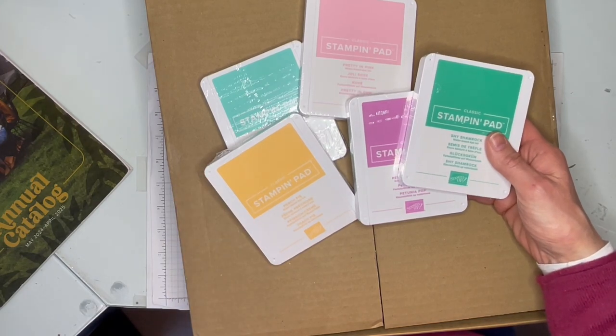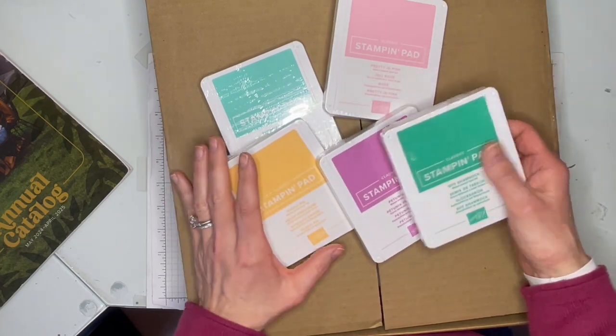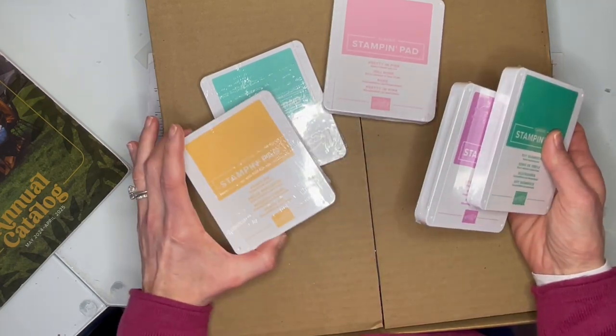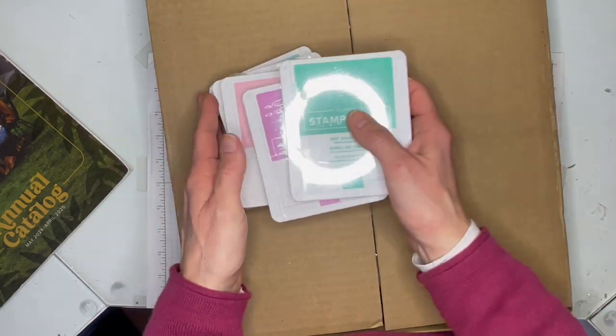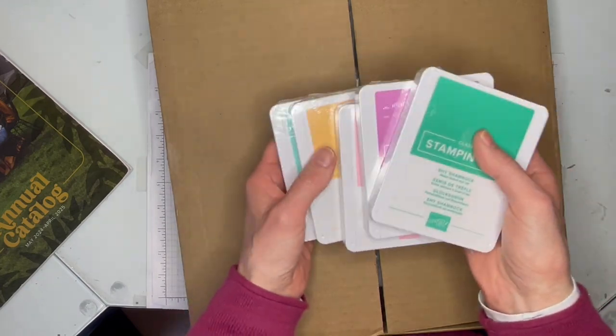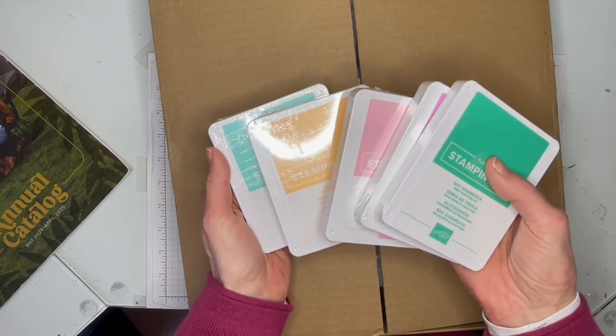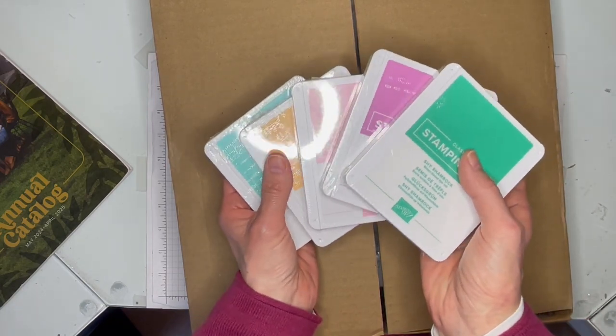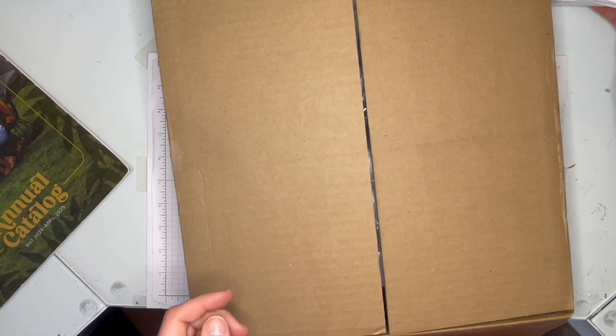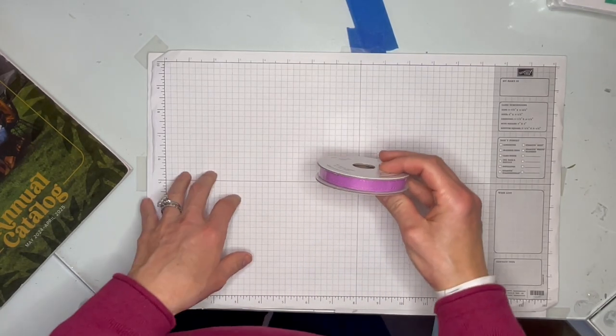So these are the five new in colors coming and we'll have these available for two years. At least at my classes, my customers will get to see them and use them up close and then decide which ones really fill a need in their color collection. Some of them, if you've been stamping a long time, are similar to colors we've had in the past, but they're always just different enough that of course I want to have all the choices.